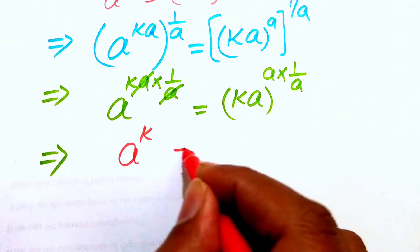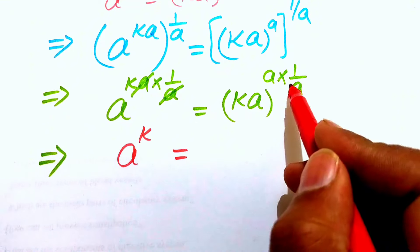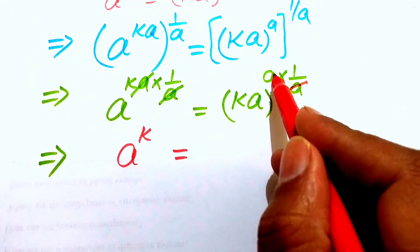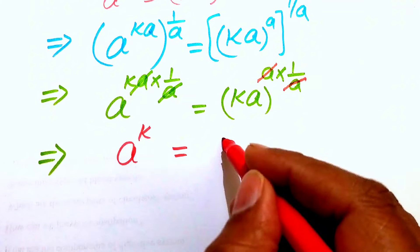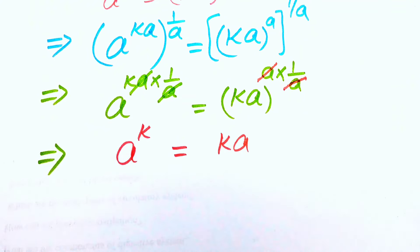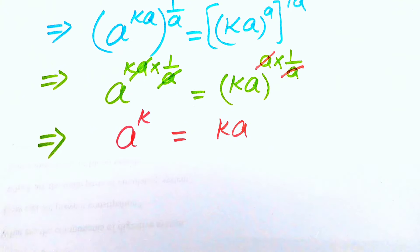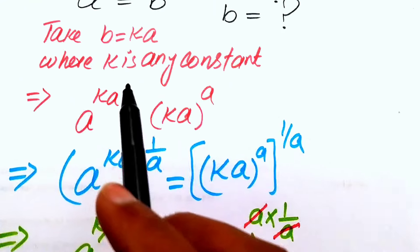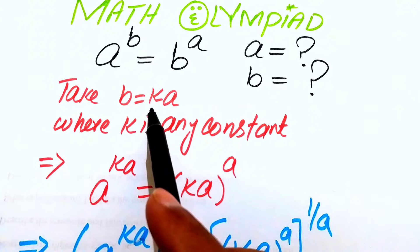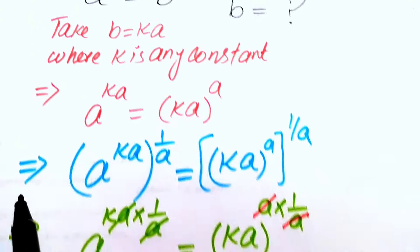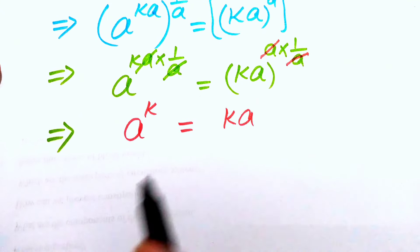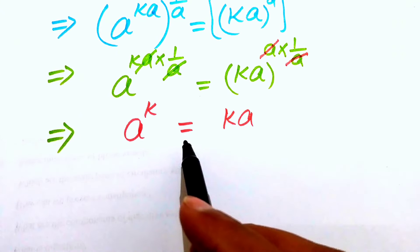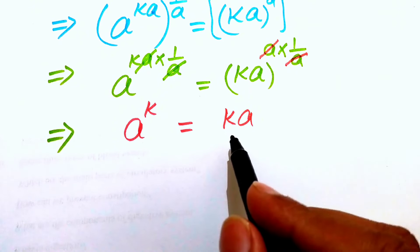Multiplying through, we get a to the power of k equals k times a on the right-hand side. In order to find the value of a and b, we first find the value of k.